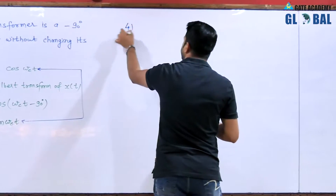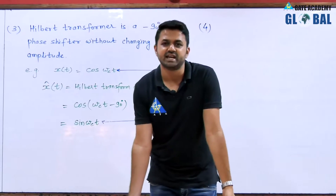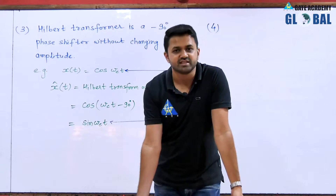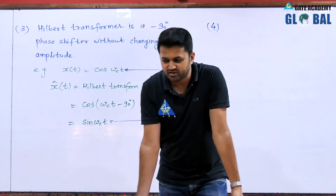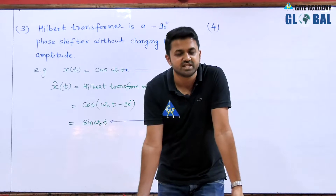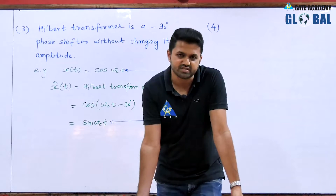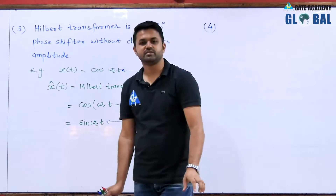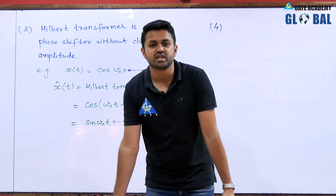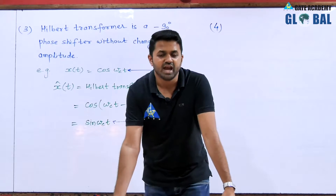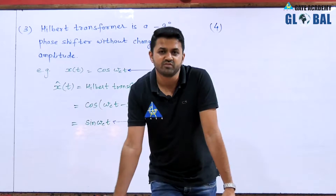Fourth point: this is about the time domain. When the signal is given in time domain and is especially in cosine or sine form, we can directly change the phase by minus 90 degrees in the time domain itself. But suppose we have the spectrum of the signal — that means we have the Fourier transform of that signal. Then to take the Hilbert transform, we multiply the positive frequency by minus j and the negative frequency by plus j, and the resultant signal is the Hilbert transform of that signal.